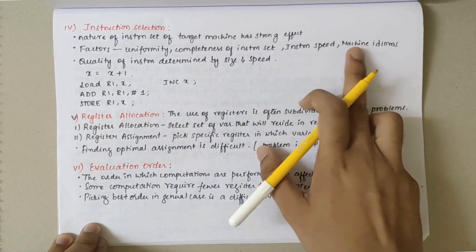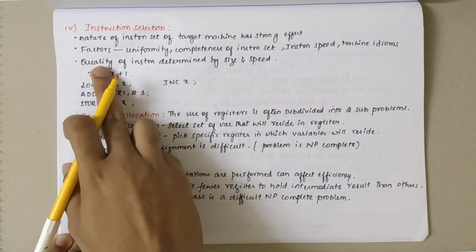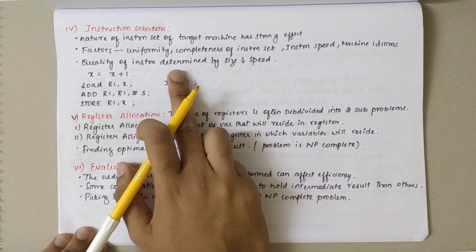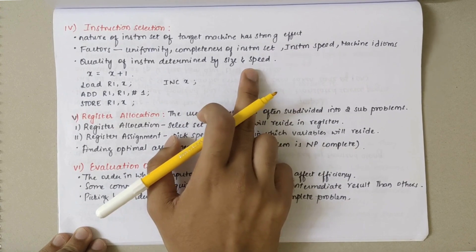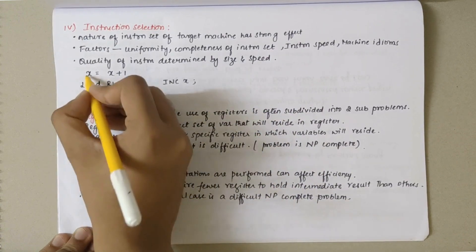The factors affecting the instruction selection are uniformity, completeness of instruction set, instruction speed, and machine idioms. Quality of instruction is determined by the speed and the size.